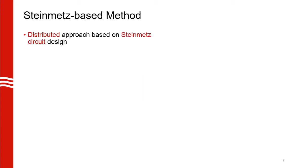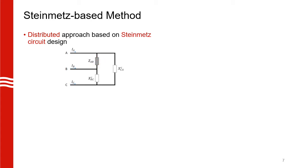Our next strategy is a distributed approach based on the Steinmetz circuit design. To give a quick background, here is a simple example of an unbalanced three-phase node where a load is connected between only two phases. According to the Steinmetz circuit design, we can connect reactances to the other phases in order to balance the three-phase node. We will extend the same principle and instead of reactances, use reactive power injections from solar PV systems to balance the three-phase node.